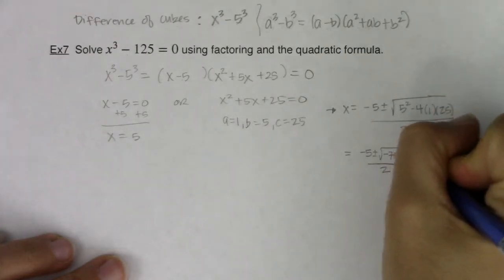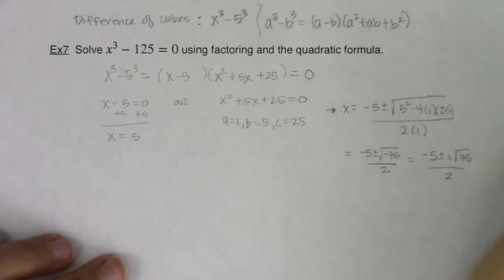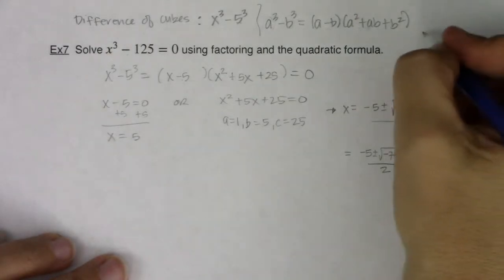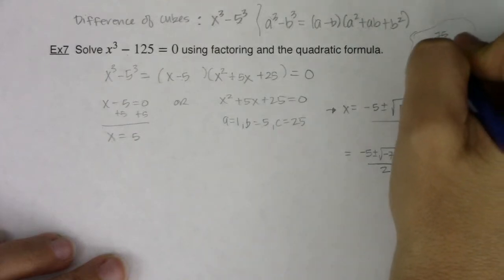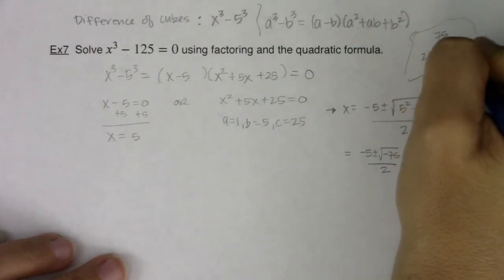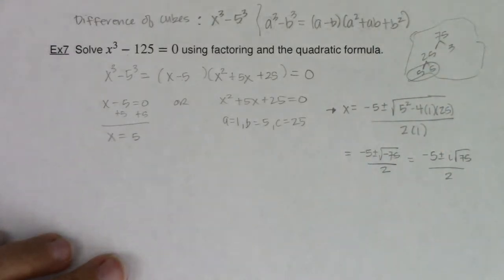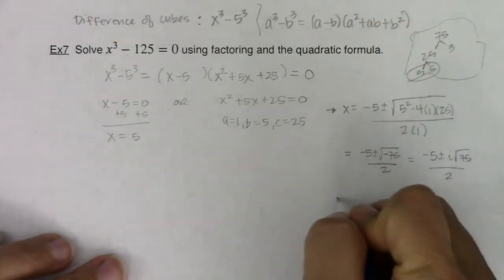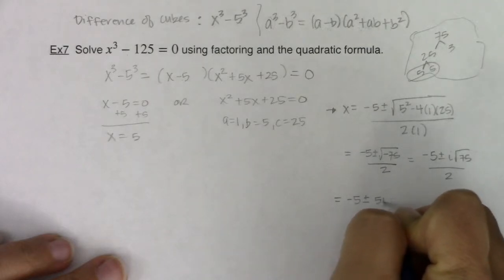I see I can pull the i out. So I've got negative 5 plus or minus i root 75 all over 2. Let's just do a quick little factor tree for 75. 75 is 25 and 3. This is 5 and 5. So I can see my pair of 5s. So I am looking at negative 5 plus or minus 5i root 3 over 2.